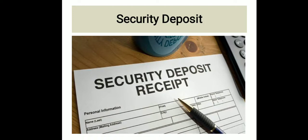Security Deposit: Once the tender is accepted, the selected contractor should deposit 10% of the total cost of work as security deposit with the department. This amount includes the earnest money already deposited. The contractor may deposit the entire amount at the beginning of the work, or it may be deducted from the running bill of the contractor.